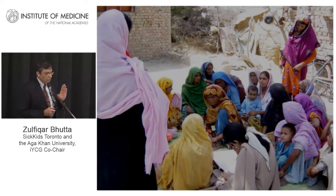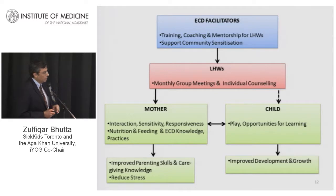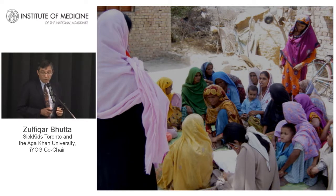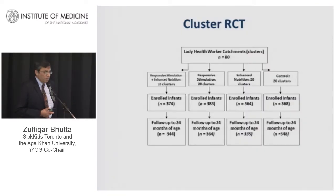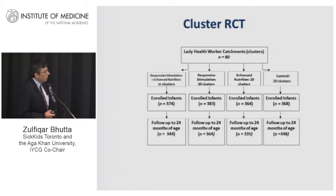Both individual counseling and group counseling were used to maximize reach. This was a cluster RCT with about 20 clusters in each group, a two-by-two factorial design, with close to 1,200 children followed up to 24 months of age with relatively low attrition. Overall mortality rates across categories are comparable with the general under-five mortality for that district.